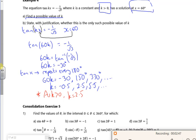State with justification whether this is the only such possible value. Well, no. Because I could have 5.5 and I could have the next one along... I thought, well, no, it's going up in 3's, isn't it? So the next one along would have been 8.5, and the next one, 11.5. Because the graph repeats itself every 180 degrees.